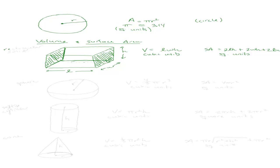A cube is a rectangular solid where the length, width, and height all measure the same. Now let's talk about a sphere, which is essentially a ball — three-dimensional, not flat like a circle. The radius r goes from the center to the surface. The volume of a sphere is four-thirds π r cubed, in cubic units. The surface area of a sphere is 4π r squared, in square units.